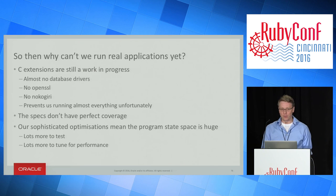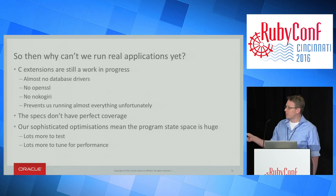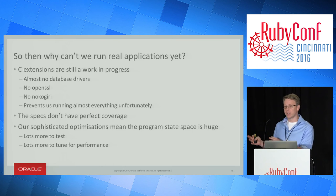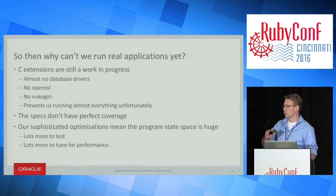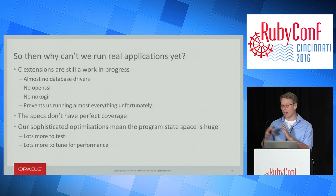So why can't we run any real applications? If we've got that far — if we support such a high proportion of the language specs — why can't we run anything? It's these C extensions. They're still a work in progress, and we've got almost no database drivers. OpenSSL doesn't work yet. Nokogiri doesn't work. They're at the bottom of the dependency stack for almost every Rails application and any other Ruby application. And the specs also don't have perfect coverage — we do very sophisticated optimizations, which means you can't just test that array accessing works; you need to test it works with an integer array, a double array, and so on.